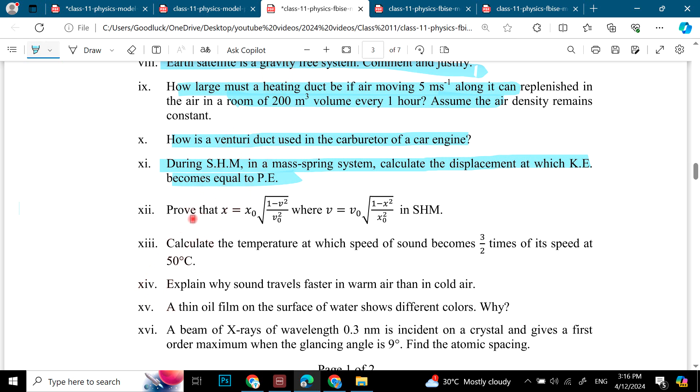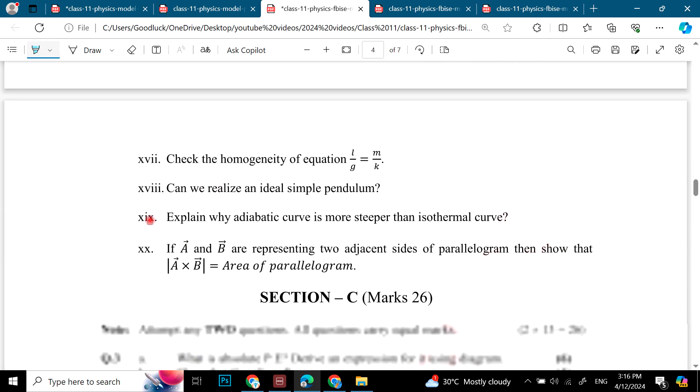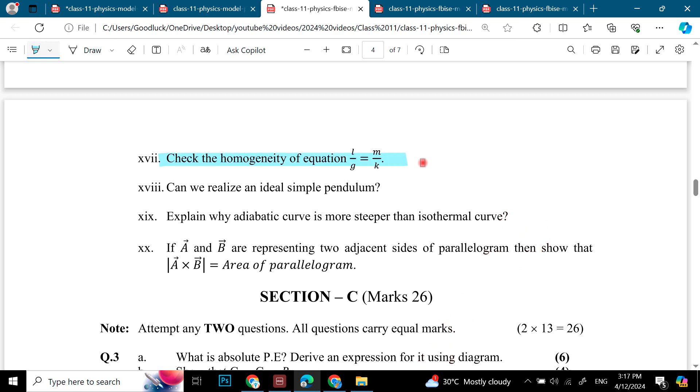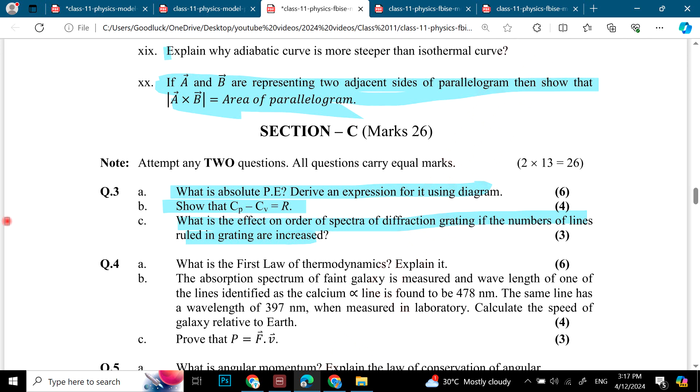This is a new question, simple harmonic motion. Explain why sound travels faster in warm air than in cold air. A thin oil on the surface of water shows different colors, why? A beam of x-ray of wavelength is 0.3 nanometer incident and you have to find atomic spacing. Check the homogeneity of the equation. How do we check the homogeneity of the equation? Dimension of the equation. Can we realize an ideal pendulum? Explain why. This is repeated. And this is a new question, important question.